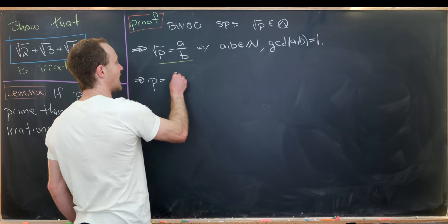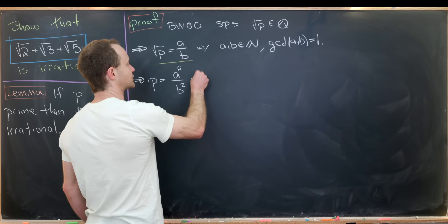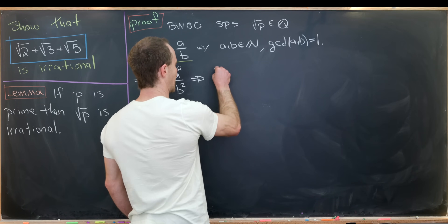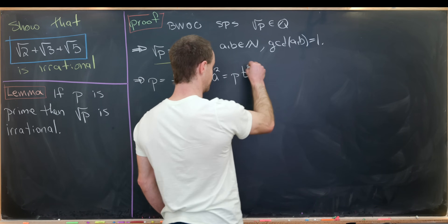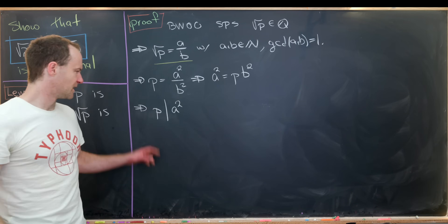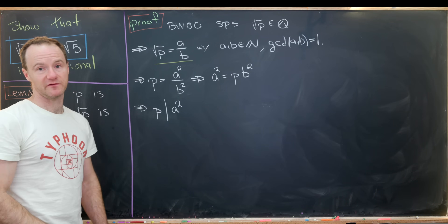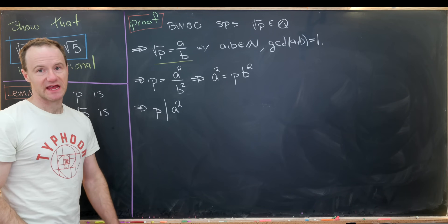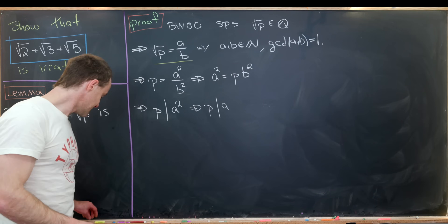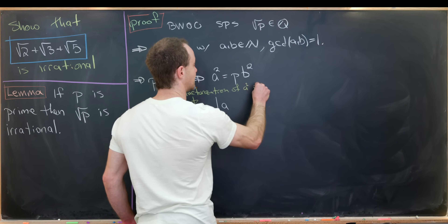Squaring both sides gives us p equals a squared over b squared. Let's rewrite this as a natural number equation: a squared is equal to p times b squared. Notice that tells us that p divides a squared. Why does p divide a squared? Because that's the same as saying a squared is a multiple of p. But then if p divides a squared, and p is prime, that means p in fact divides a. This is a subtle consequence of the factorization of a squared into primes.